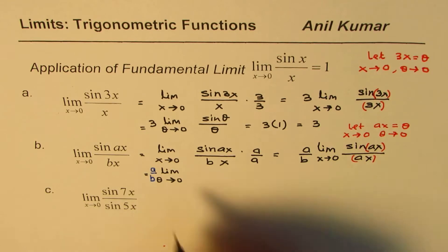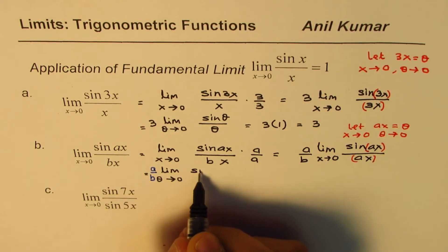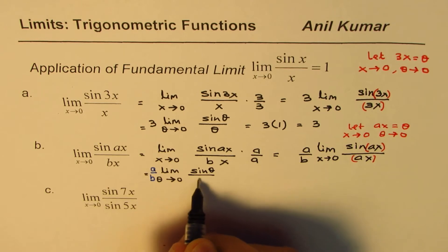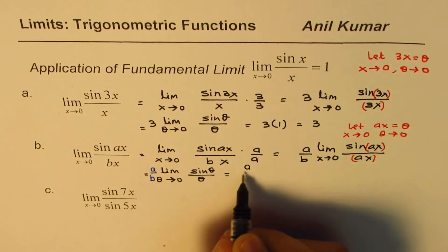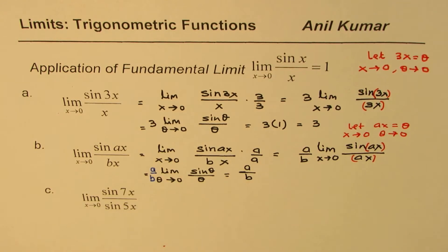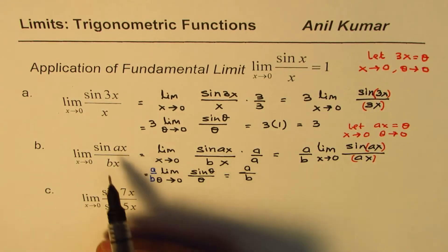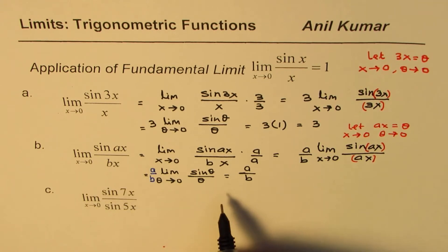And what we have inside is sine theta over theta. And this, you know, is 1. And therefore, a over b is our answer. So we again got the same answer as these coefficients.